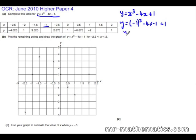So negative 1 cubed is negative 1. Negative 4 multiplied by negative 1 is positive 4 plus 1. So y equals 4. We'll put that into the table and plot it on our graph.